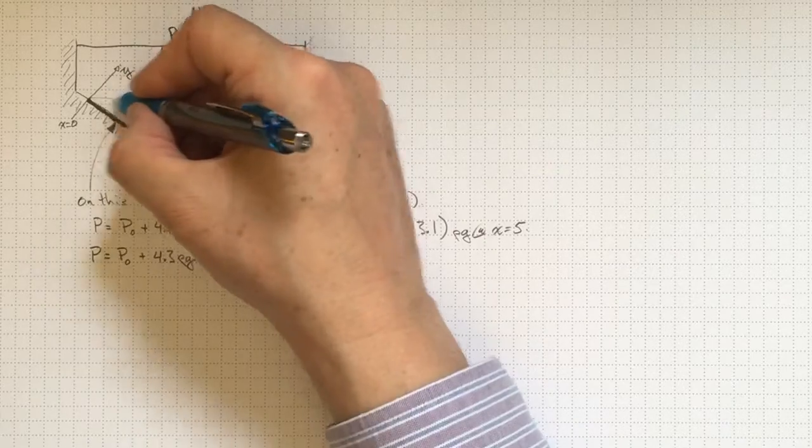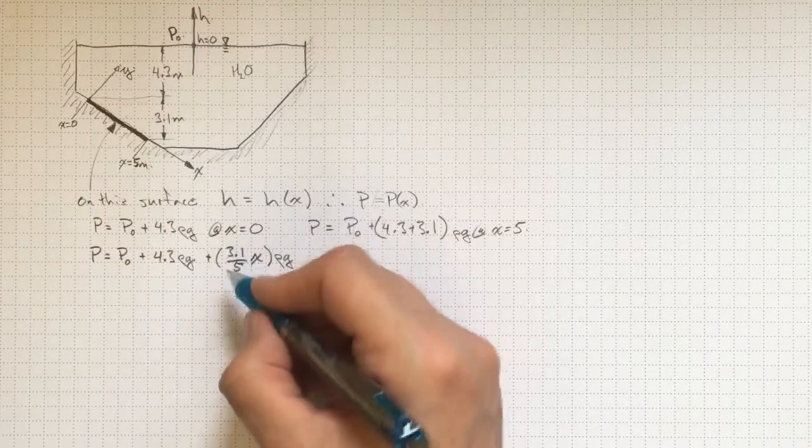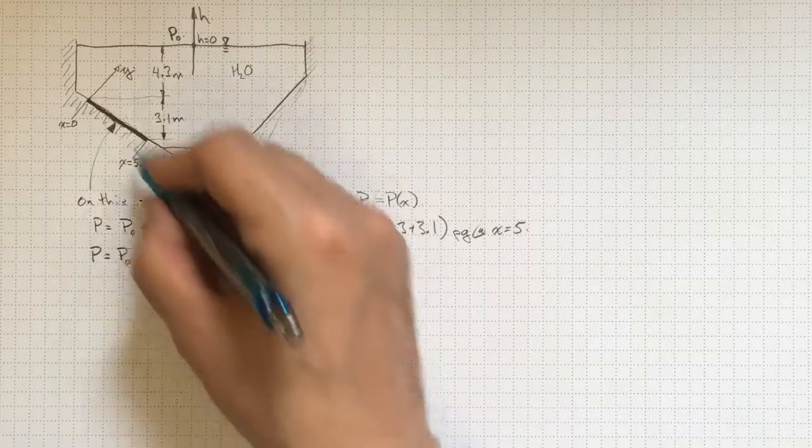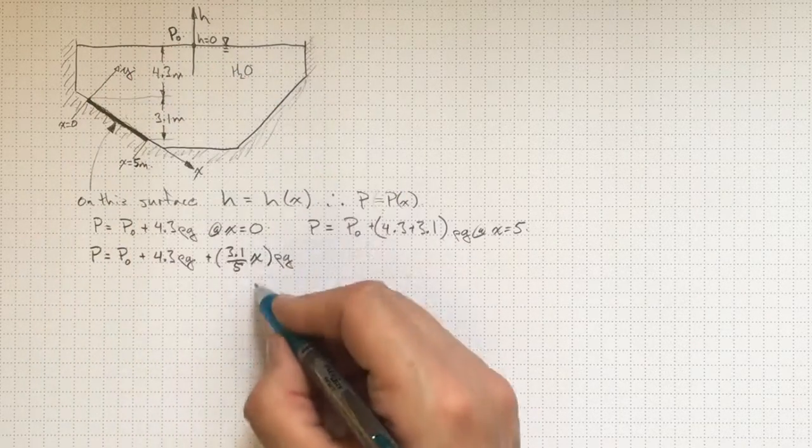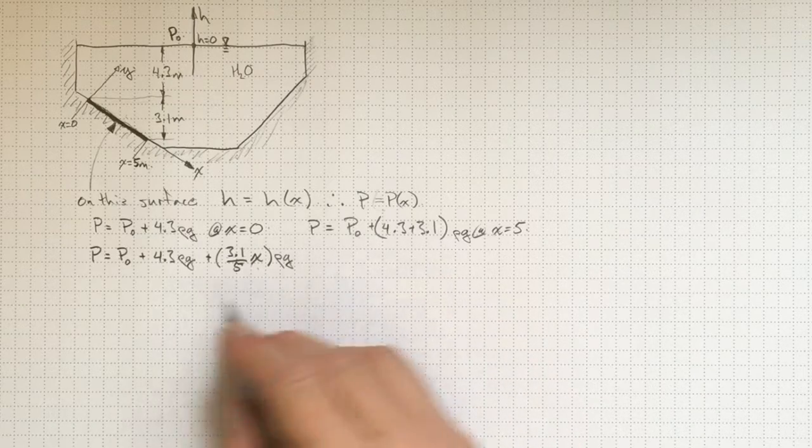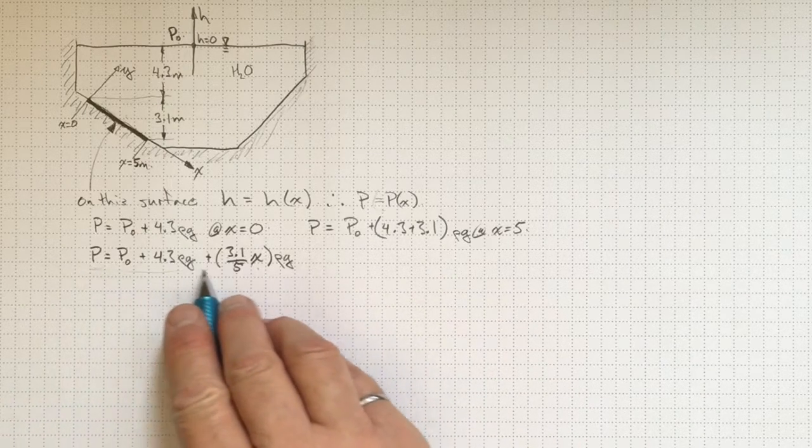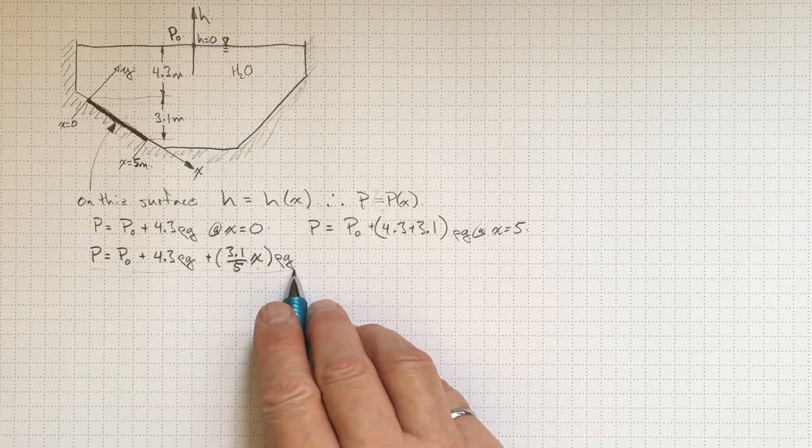And then it's going to increase by 3.1 over five times x times rho g. 3.1 is the elevation change that we get. x divided by five gives us the fraction of the distance that we progressed along from zero down to 3.1. So that'll give us a relationship for pressure as a function of x.